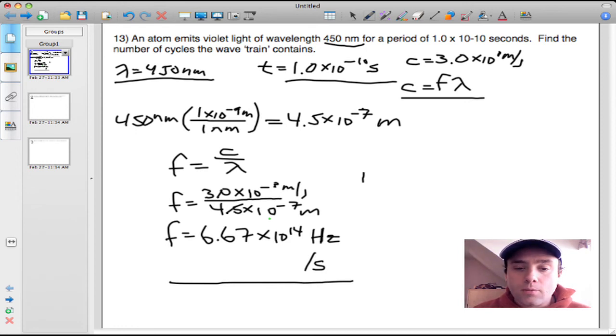The next step is finding the number of cycles by multiplying 6.67 times 10 to the 14th per second times 1.0 times 10 to the negative 10 seconds. Dimensionally, the seconds crosses out with the per seconds.